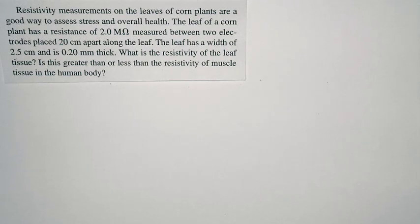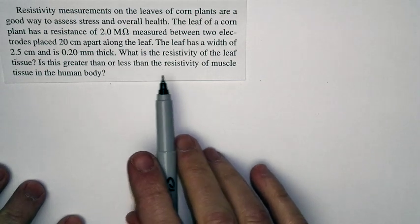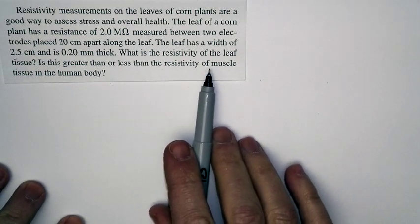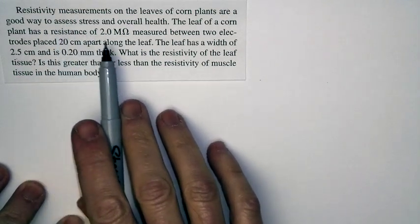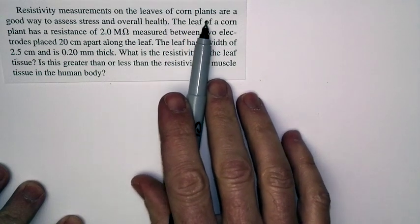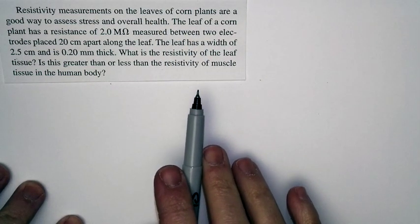We've seen in the chapter that electrical measurements can often provide some really interesting information about the world. And here's a question about using the resistivity of tissues, particularly of corn plants, in order to assess their health.